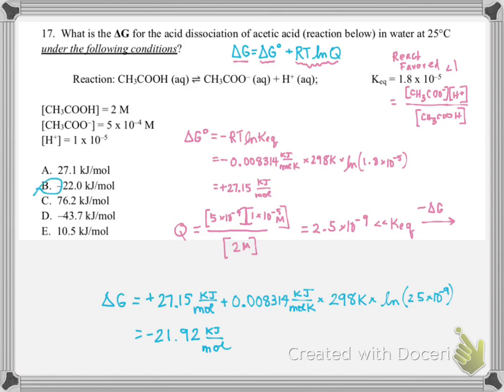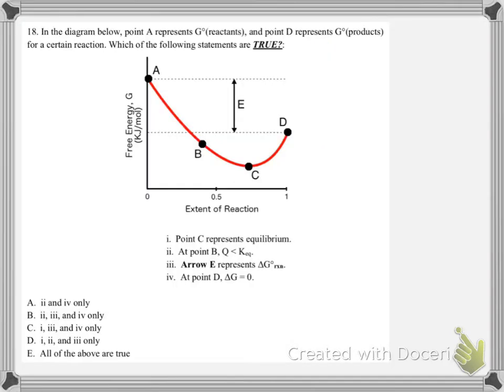That reaction will be spontaneous and it can do 22 kilojoules per mole of work every time it goes. In number 18, we're looking at how the free energy can change the extent of a reaction. We have a bunch of different points marked here, and they tell us that point A represents the energy level of the reactants and D represents the energy level of the products.